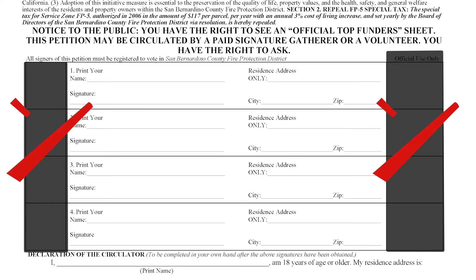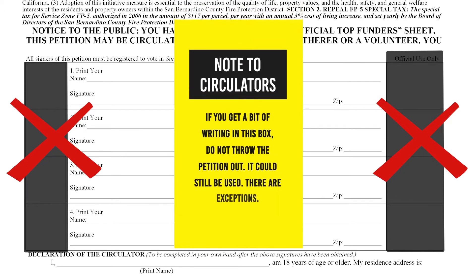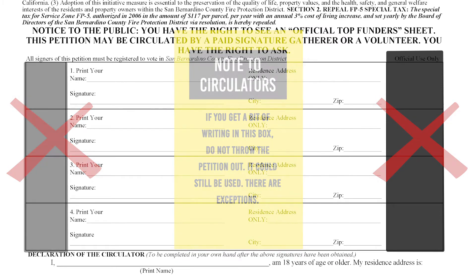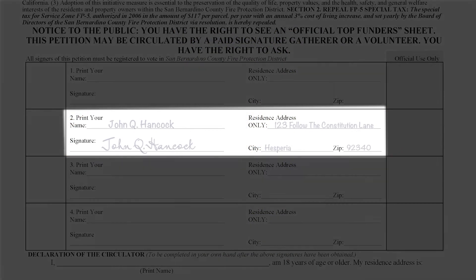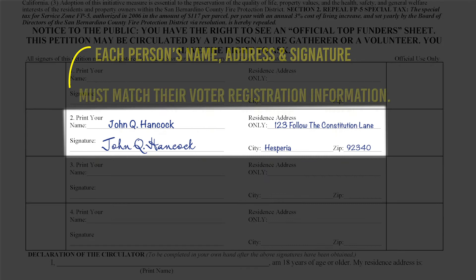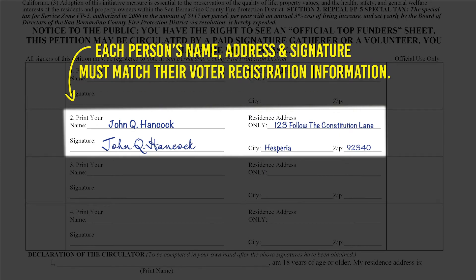Do not write or stray into the official use boxes of the form. Circulators: if you get a bit of writing in this box, do not throw the petition out — it could still be used, as there are exceptions. Remember, each person's name, address, and signature must match their voter registration information.